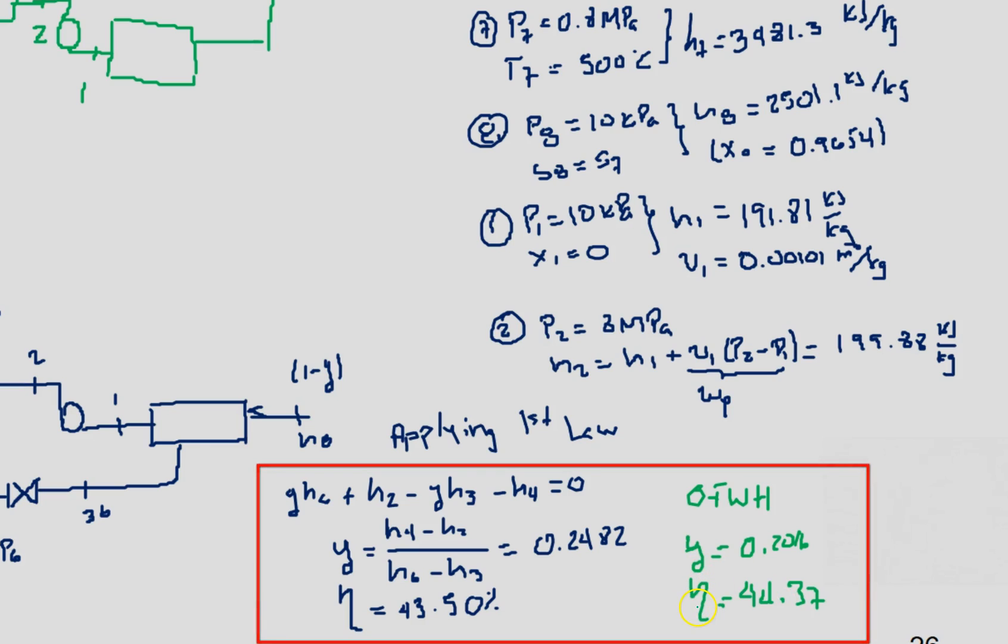So that confirms what we discussed in the theory: that the closed feedwater heater is less efficient. Since they don't mix, we have the extra cost of the pump, and the closed feedwater heater, since they don't mix, doesn't have as good heat transfer, so their efficiency will be lower.